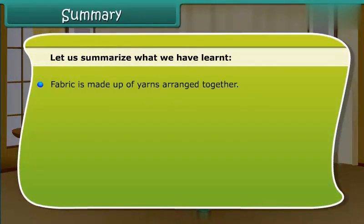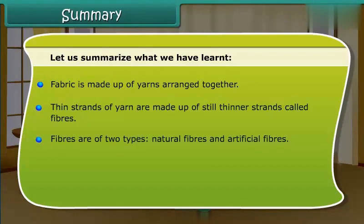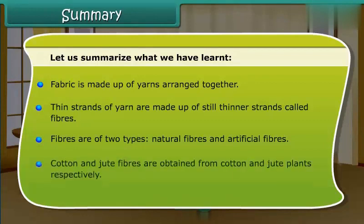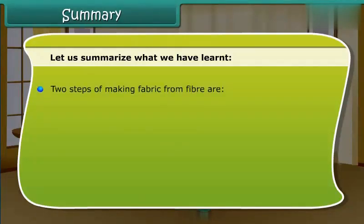Let us summarize what we have learned. Fabric is made up of yarns arranged together. Thin strands of yarn are made up of still thinner strands called fibers. Fibers are of two types: natural fibers and artificial fibers. Cotton and jute fibers are obtained from cotton and jute plants respectively. The two steps of making fabric from fiber are: first, making yarn from fiber, and second, making fabric from yarn.